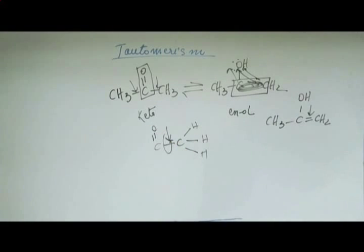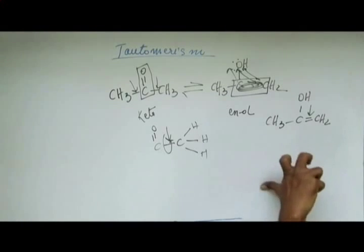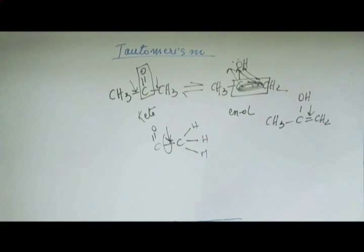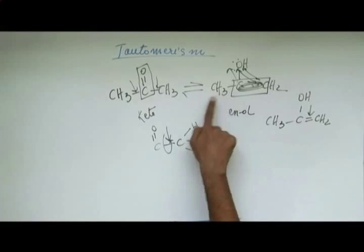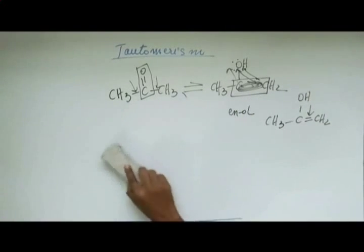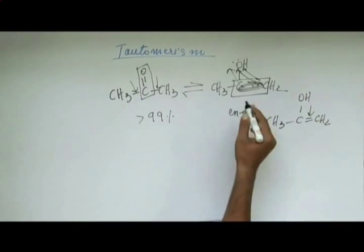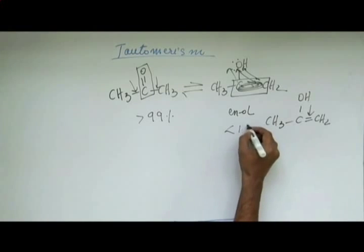Going from enol to ketone will be supported by the change in entropy. This is another reason that adds to the low content of enol in any system. Because of these three reasons, the percentage of ketone in any equilibrium like this is very high. To your amazement, this percentage is greater than 99%, and enol is only less than 1%.